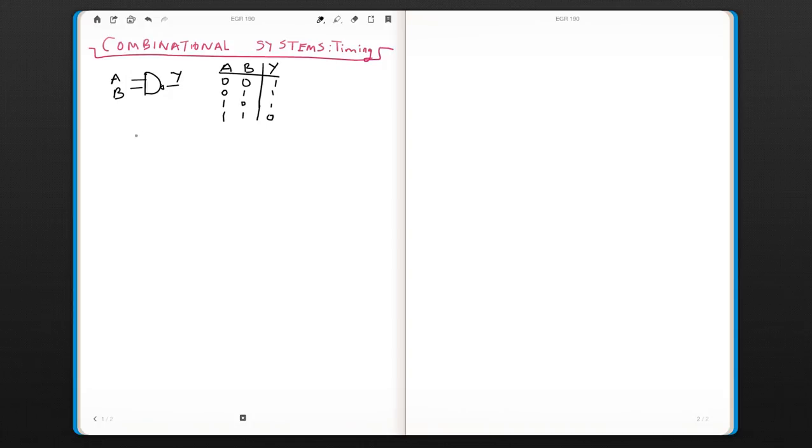But in the real world you continue to get inputs, so your inputs change. Let's say you have an input sequence like this. You are getting 0, 1, 1, 1, 1, 0 and 1, 1.